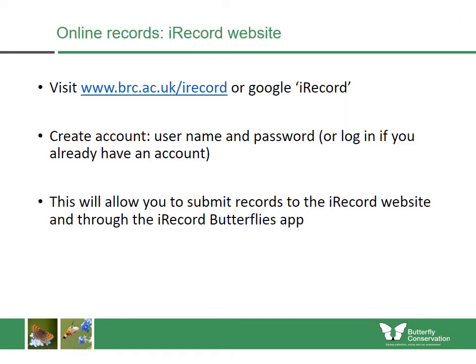You can also use the iRecord website — you can use the address on the screen or simply Google 'iRecord.' You'll need to create an account, which gives you a username and password, or you can log in if you already have one. iRecord is a great resource for recording different types of animals — you can also record bees and other insects through iRecord. This allows you to submit records to both the iRecord website and the iRecord Butterflies app.